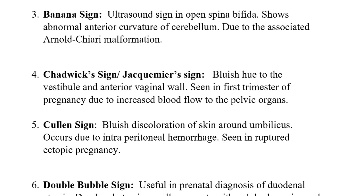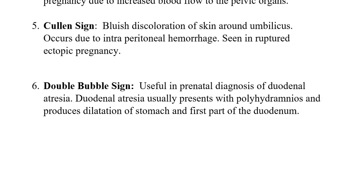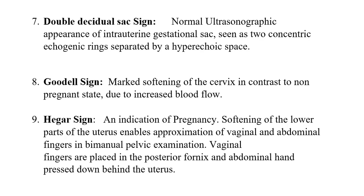Cullen's sign is bluish discoloration of the skin around the umbilicus. It occurs due to intraperitoneal hemorrhage, seen in ruptured ectopic pregnancy. Double Bubble sign is useful in prenatal diagnosis of duodenal atresia; it is seen in duodenal atresia, which usually presents with polyhydramnios and produces dilatation of the stomach and first part of the duodenum.